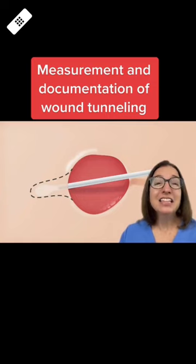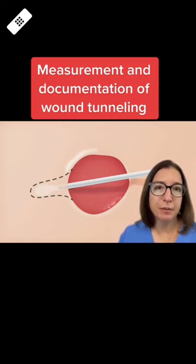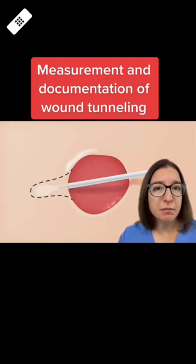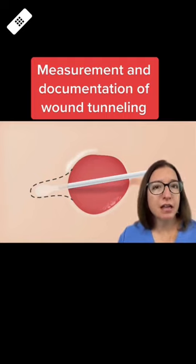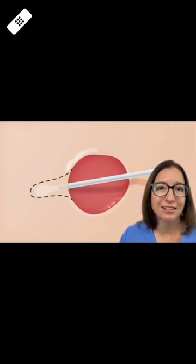Next, you would measure the length of the tunnel using a cotton-tipped applicator. If the length of the tunnel is 5 centimeters, then you would document this tunnel as a 5-centimeter tunnel at 9 o'clock.